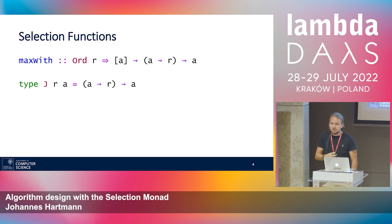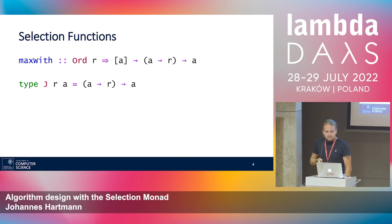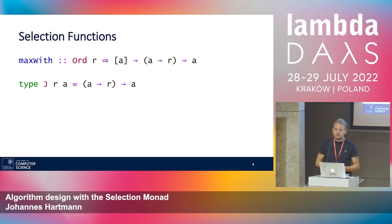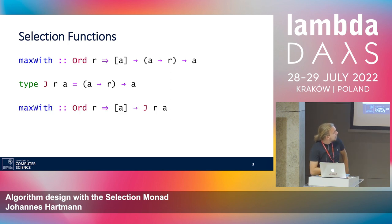The next question is: what can we do with selection functions? Let's start simple — we can build a pair operator that takes two selection functions, one of type JRA and one of type JRB, and produces a new selection function of type JR(A,B).